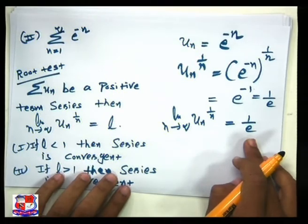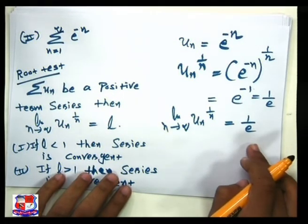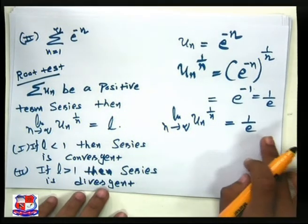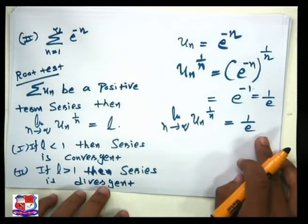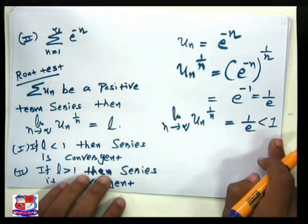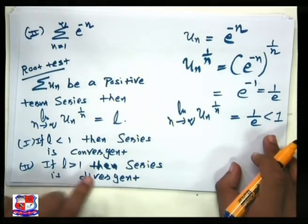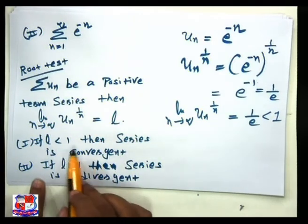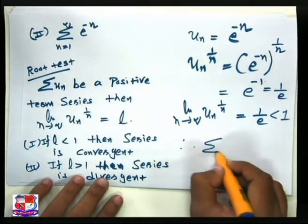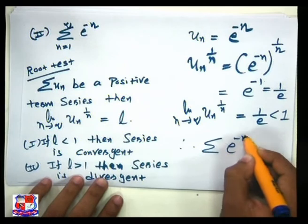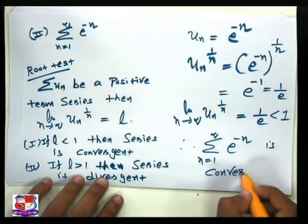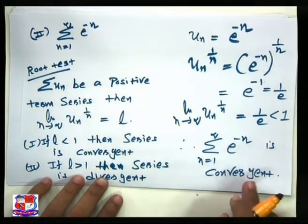Since the limit is 1/e, and the value of e is approximately 2.71, we have 1/e less than 1. According to the root test, if the limit is less than 1, the series is convergent. Therefore, summation e^(−n) is convergent.